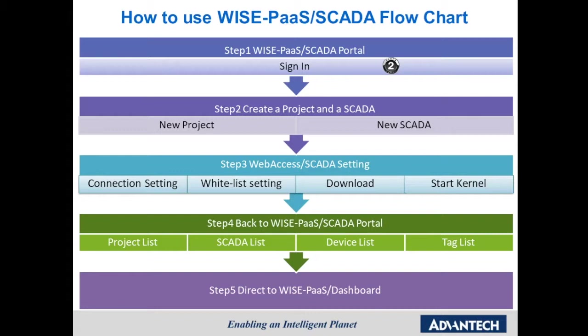Here are five steps when using the WISE-PaaS SCADA portal. Step 1 is to sign in to the WISE-PaaS SCADA portal and create a new project and SCADA node. Step 2 is to go back to WebAccess SCADA at the edge site, configure the WISE-PaaS connection settings and whitelist setting, download your project, and start the kernel. Step 3 is to go back to WISE-PaaS SCADA portal and check if devices and tags have been uploaded from the edge site. If both the tag list and device list are shown correctly, we can design the panel in WISE-PaaS Dashboard.